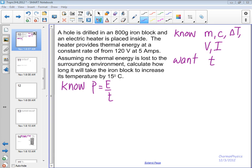This is a hole being drilled in an - this is on page three - in an 800 gram iron block and we have an electric heater placed inside. The heater provides thermal energy at a constant rate of 600 watts.